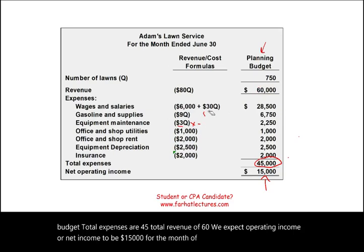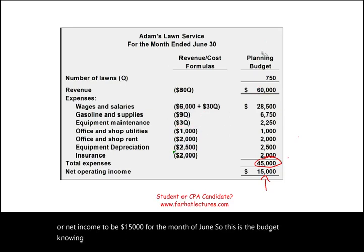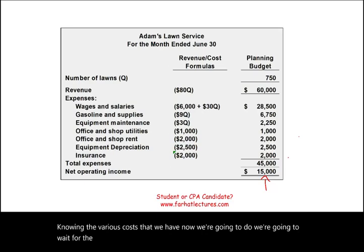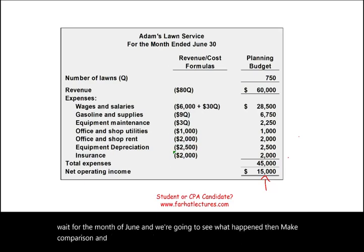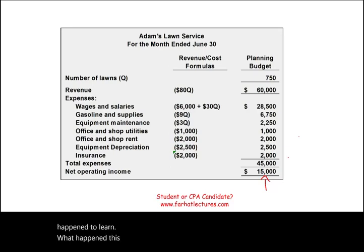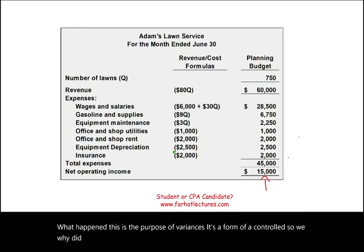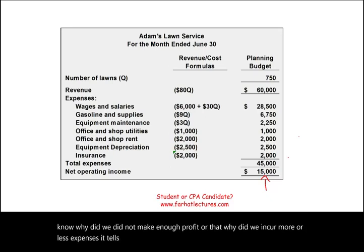This is the budget based on the various costs we have. Now we wait for the month of June and see what actually happened, then compare the planning budget to actual results to learn what happened. This is the purpose of variances — it's a form of control, telling us why we did not make enough profit or why we incurred more or less expenses. It tells us about our business.